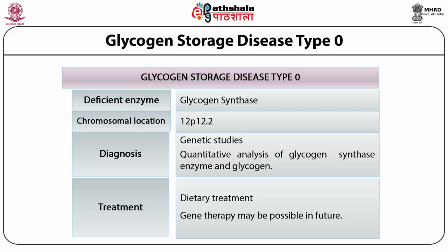GSD type 0 is an autosomal recessive disease. General symptoms during the post-prandial period include hyperglycemia, glycosuria and hyperlactic acidemia, while during fasting there is hypoglycemia and hyperketonemia. The objective in managing this disease is to prevent low blood sugar by avoiding fasting. Repeated food should be given every 3 to 4 hours during the day. High-protein food may help in reducing muscular cramping, tiredness and fatigue that patients experience.